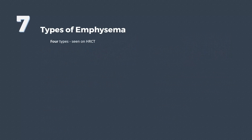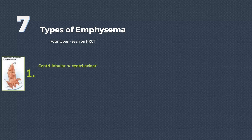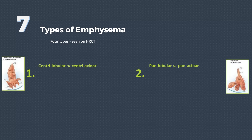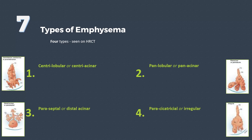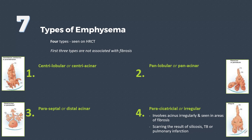Emphysema can be classified radiologically into four types: centriacinar or centrilobular, panacinar or panlobular, distal acinar or paraseptal, and the fourth type is pericicatricial or irregular emphysema. The first three types are not associated with fibrosis, while the fourth type is a result of fibrosis due to other pulmonary diseases such as tuberculosis.